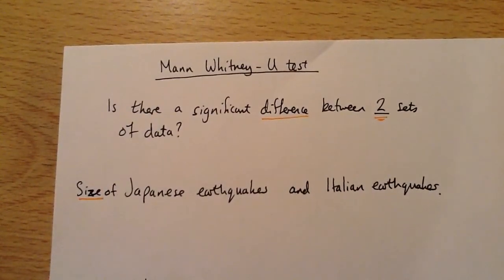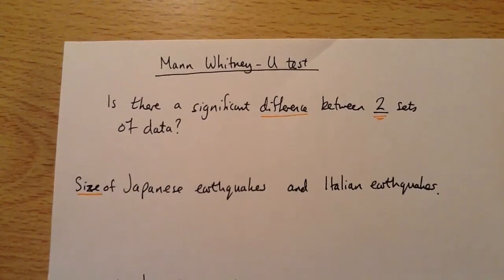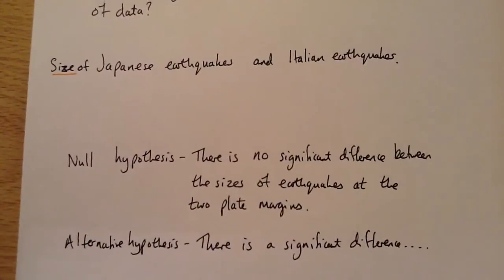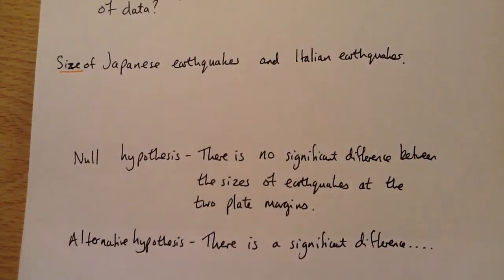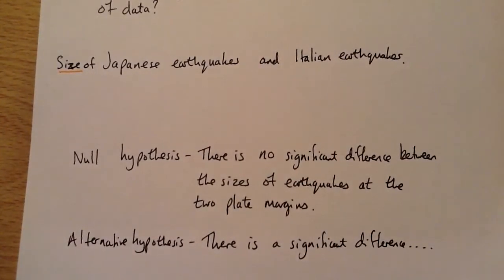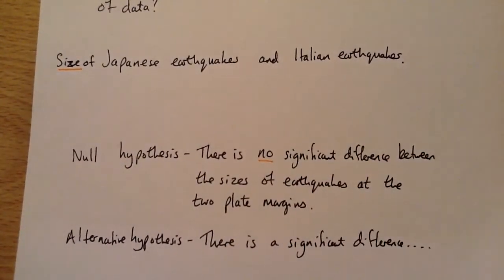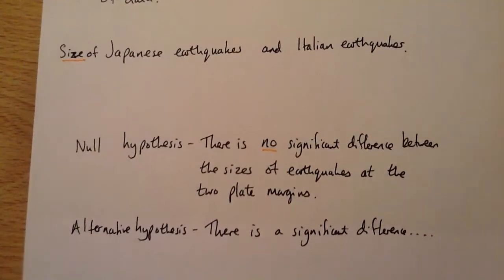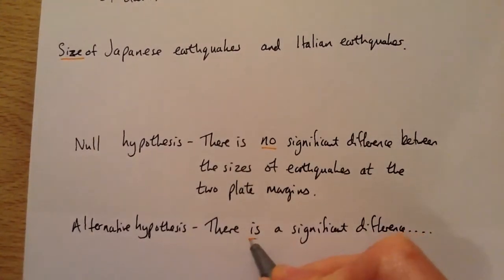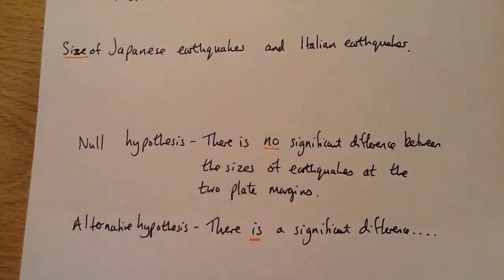You would collect your data and then draw up two hypotheses: a null hypothesis and an alternative one. The null hypothesis would be there is no significant difference between the sizes of earthquakes at the two plate margins, and the alternative hypothesis is there is a significant difference between the sizes of earthquakes at the two plate margins.